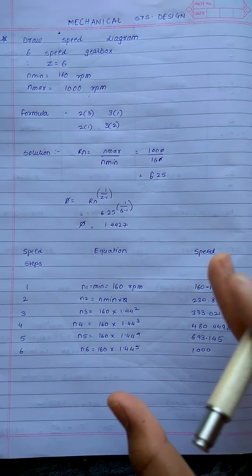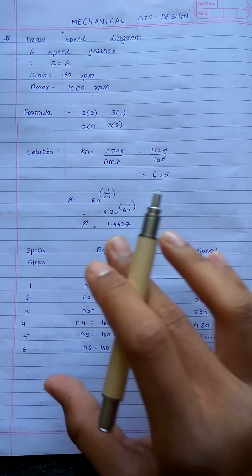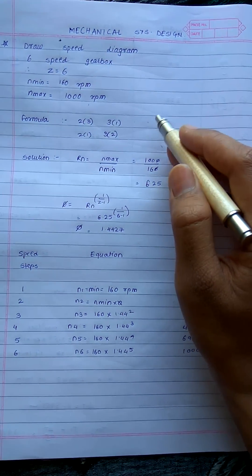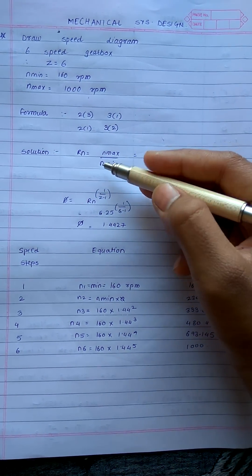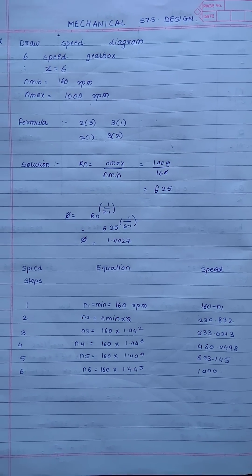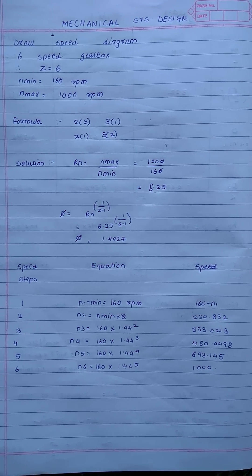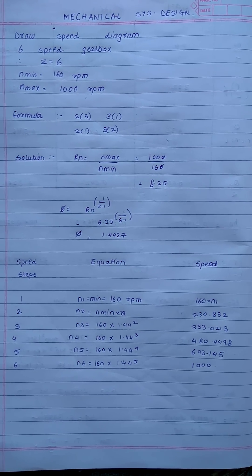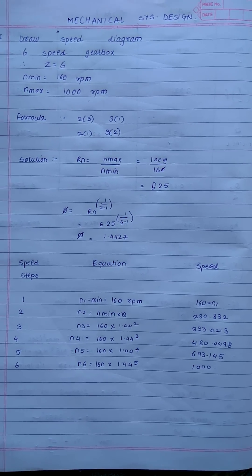Now the first step in designing the gearbox will be finding out the range ratio. Range ratio is for the 2-step gearbox. It is the reduction of speed in one stage. So we can calculate rn equals r max upon n max upon n minimum. So 1000 divided by 160, we get 6.25.